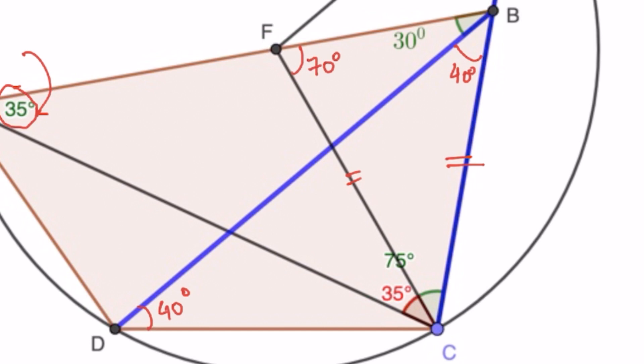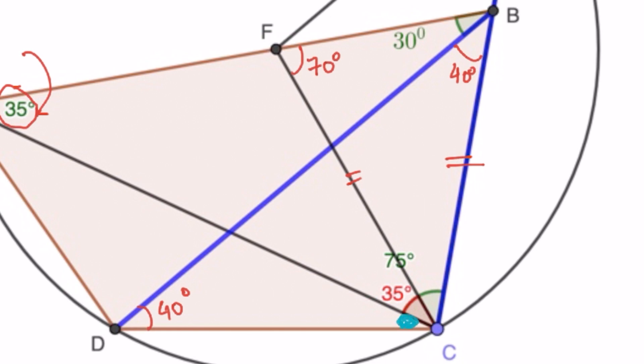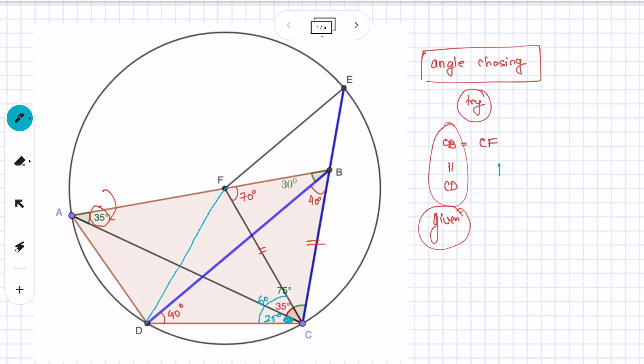Also, notice that this angle right here is 25 degrees, which means this total angle is 60 degrees. So if you work with this triangle FEC, then we have an isosceles triangle because CF is equal to CD and this included angle is 60 degrees. So this will be an equilateral triangle.